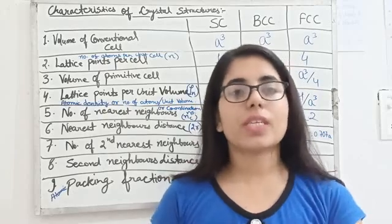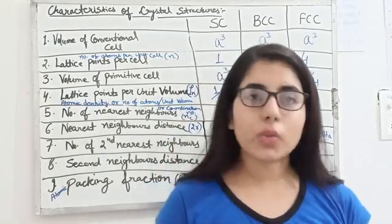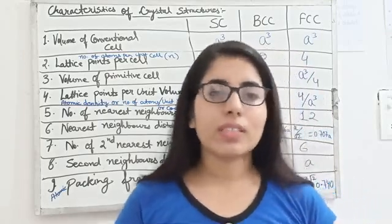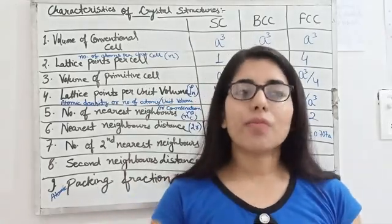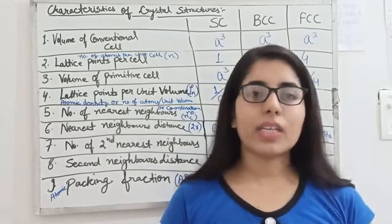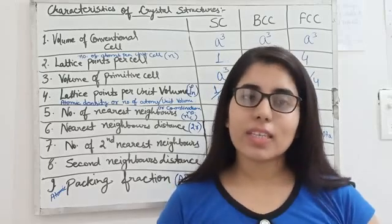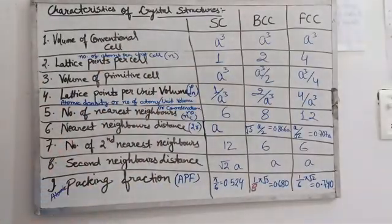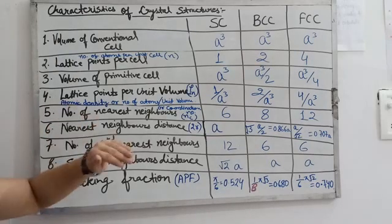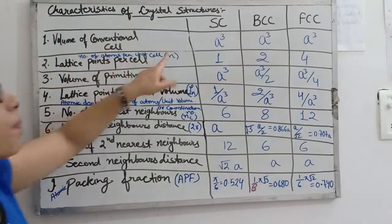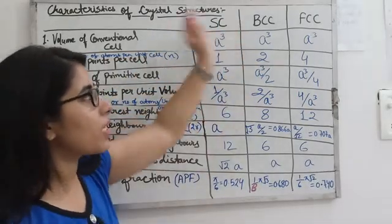You should remember the characteristics and values for different crystal systems. If you don't remember them, you need to understand those values, and in next videos we will discuss how we can find those values. So let's start and discuss different properties of crystal systems. Here we are going to discuss 9 characteristics for different crystal structures. First of all we will discuss the volume of conventional cell for simple cubic, body centered cubic and face centered cubic structures.